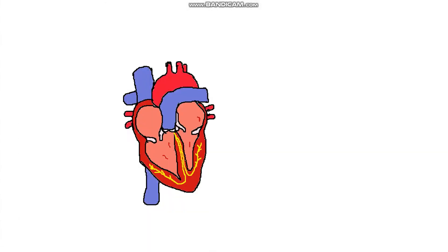In order to understand that, let's review how our heart works. In the posterior lateral wall of our right atrium, we have a very specialised structure called the sinoatrial node. Our sinoatrial node contains pacemaker cells which are able to depolarise and send out electrical impulses without the input of our nervous system.